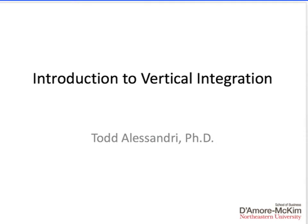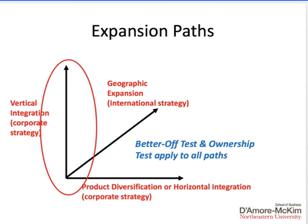We will introduce vertical integration. Vertical integration represents one of the three paths that a firm may use to expand its corporate scope, as shown in this graph. This involves expanding along the value chain.